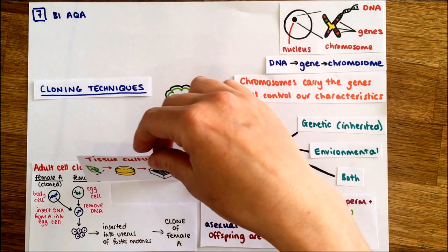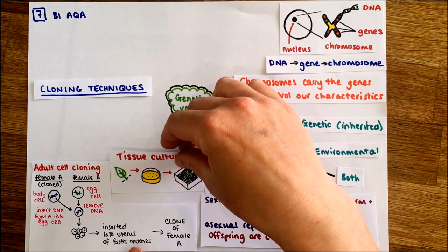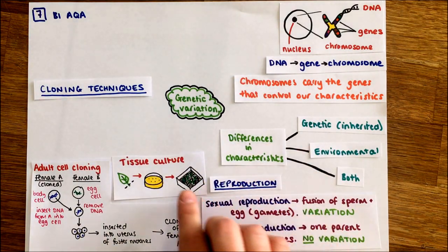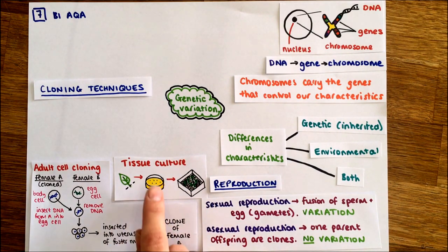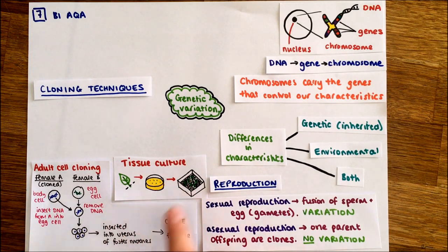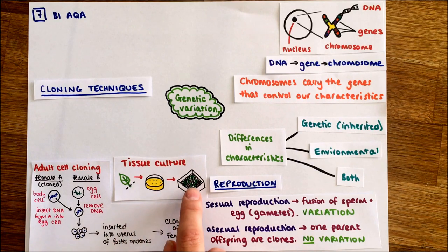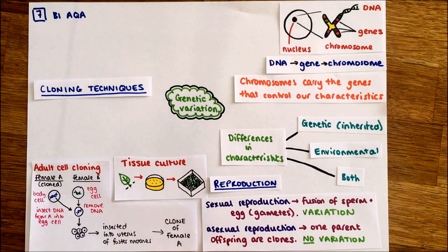The next type is tissue culture. With tissue culture, we remove a small piece of tissue - a ball of cells - from a plant, place it on a petri dish, give it nutrients to start growing, then plant it onto soil. The plants that grow are exact clones of the plant the tissue was originally taken from.